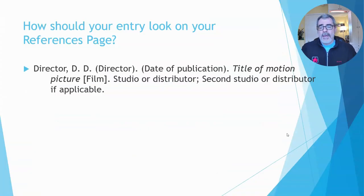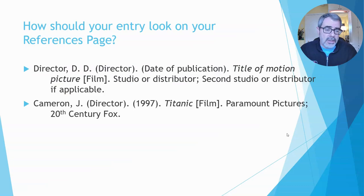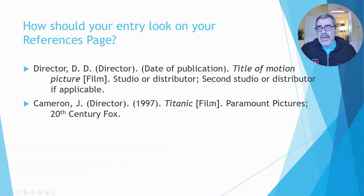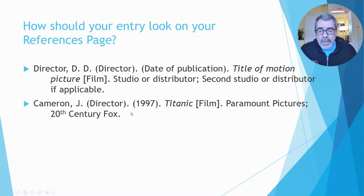Once we gather that information, here is the format — the template — that we want to use, and we plug it in. It should look just like this. After the director's name, James Cameron, you still have in parentheses the word 'Director' to let the reader know. You only have the year — in this case, 1997. The title of the film is in italics. Notice also the word 'Film' in brackets. Since we have two studio names, you use semicolons to separate them. If you had three studio names, you'd just add another semicolon and the third one. Notice also that each portion of the entry is ended with a period.